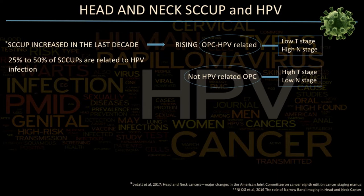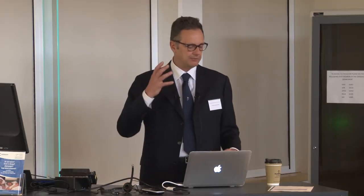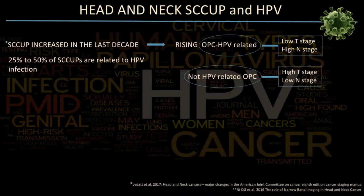The number of unknown primaries has increased in the last decade, increasingly in association with HPV. HPV-related presentation is typically very low T stage but high N stage — patients often present with a large neck mass without evidence of a primary. By contrast, non-HPV-related cases show high T stage and low N stage. This clinical feature distinguishes HPV-related from non-HPV-related tumors.